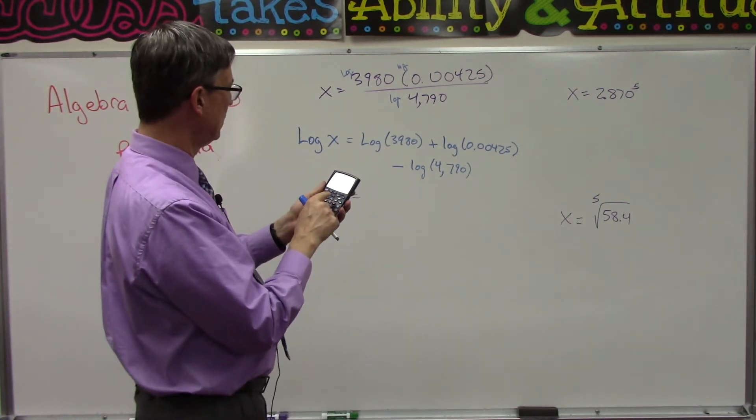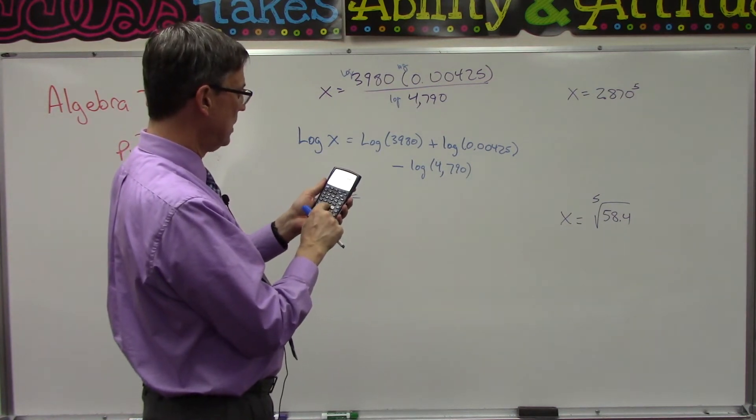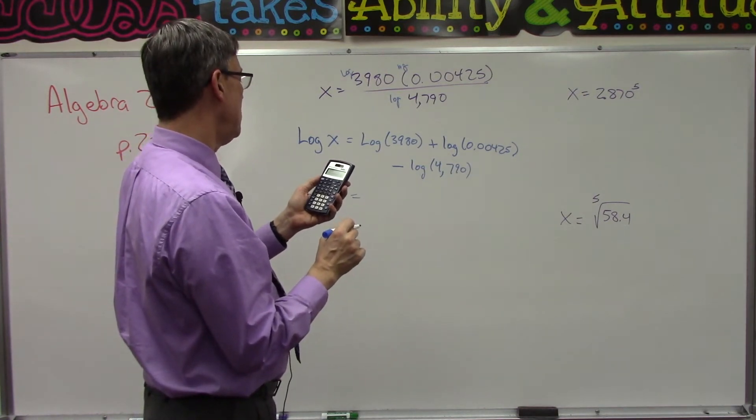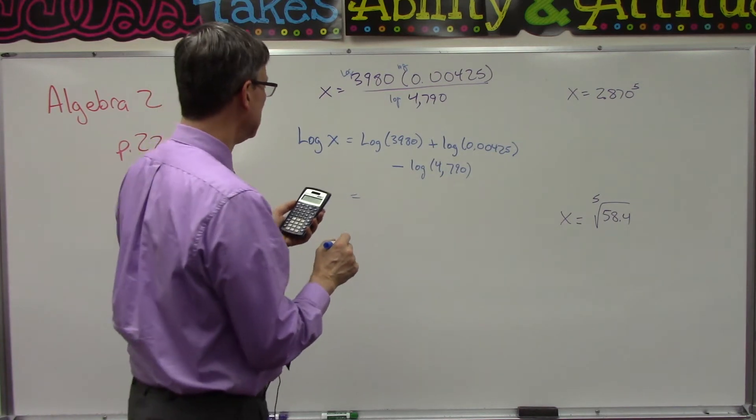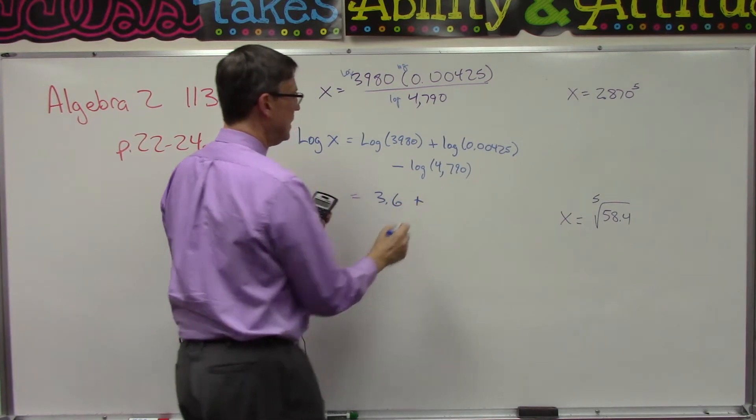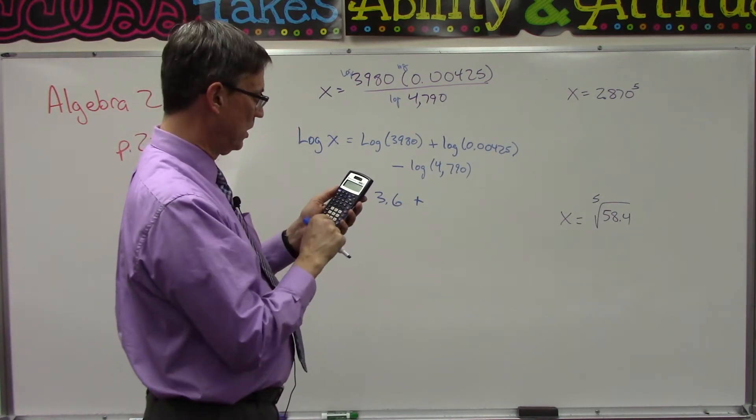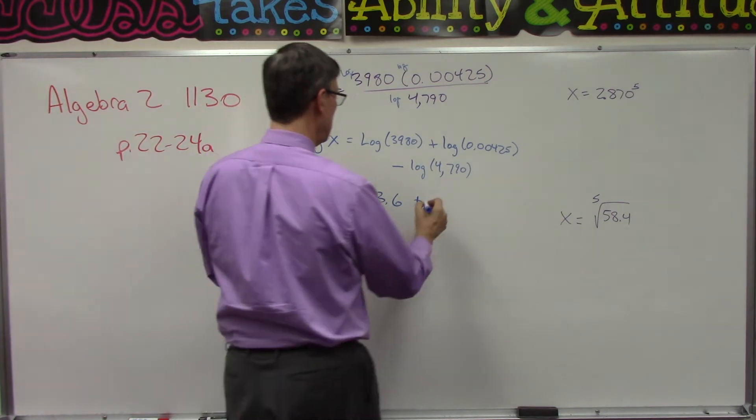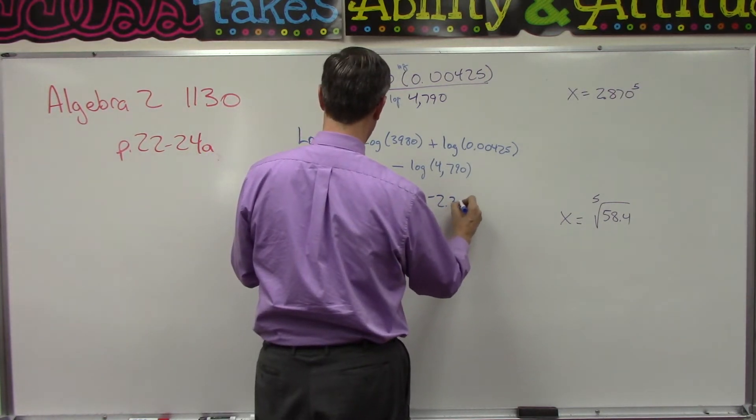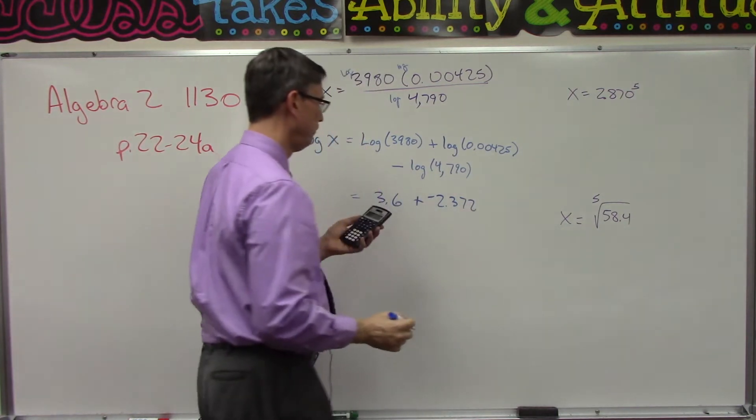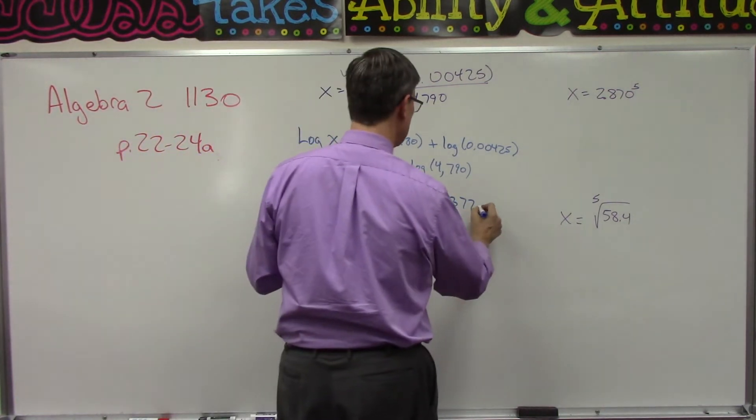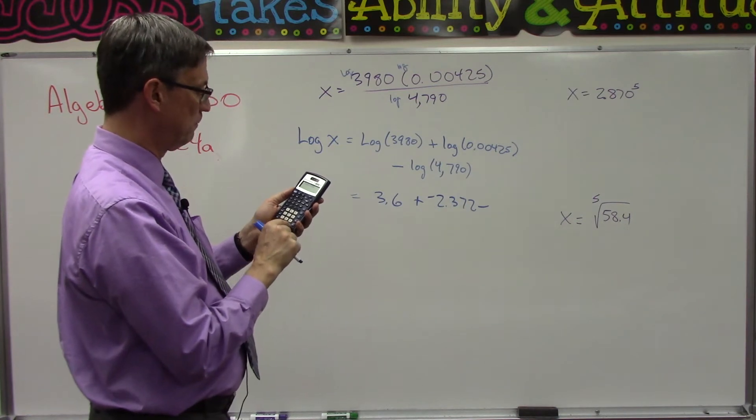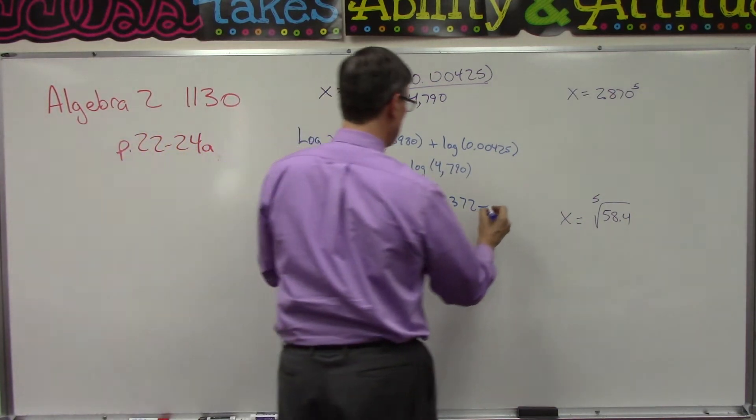So do this with me. Let's make sure we're doing it correctly here. So I hit log first, 3980, and that gives me 3.5998, which I guess is going to be 3.6. Now we'll do log 0.00425 equals negative 2.37, rounded off to a two. And then from that I'm going to subtract log 4790 equals 3.680.